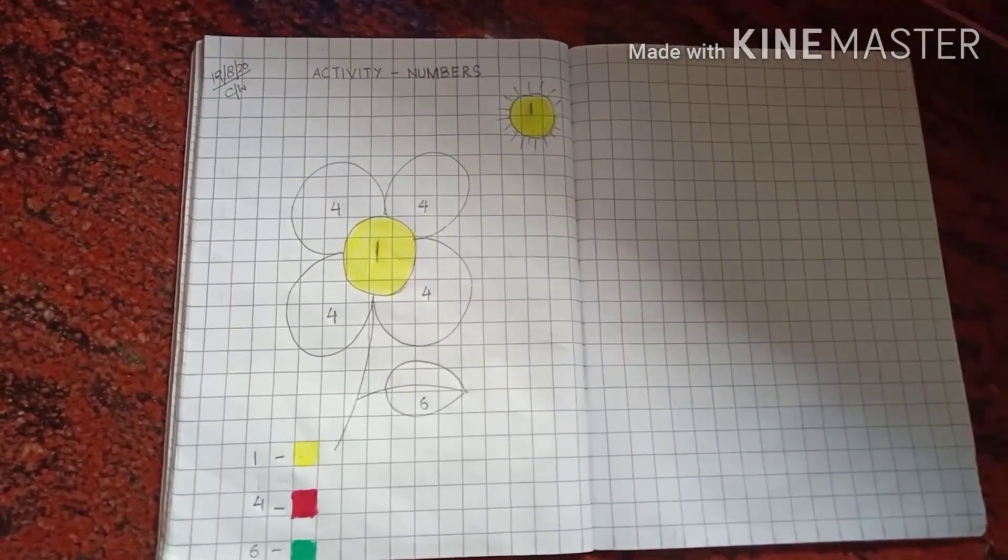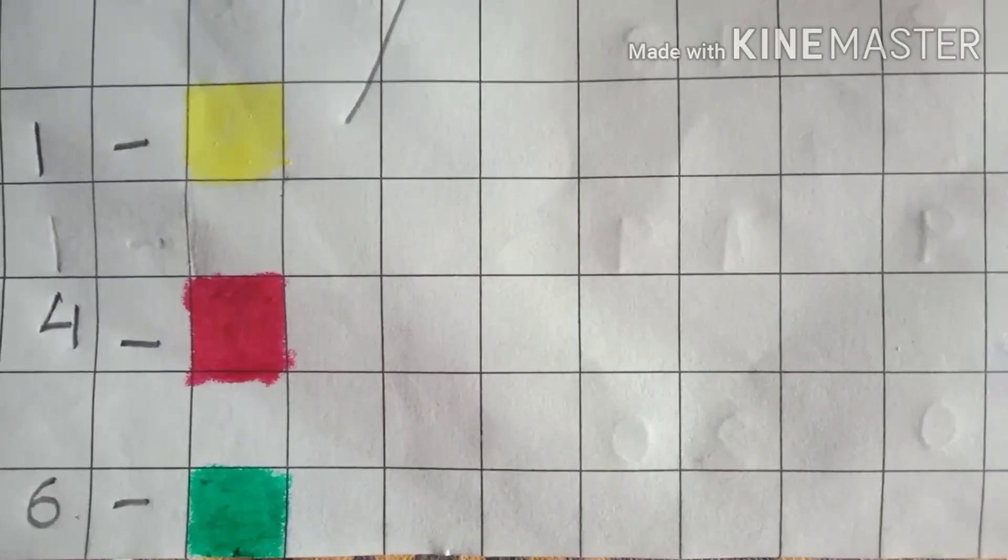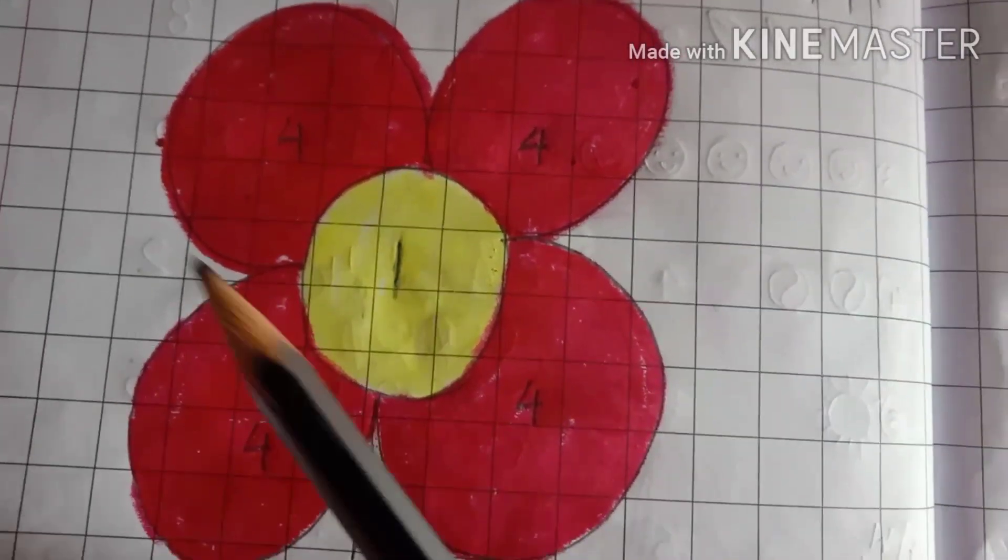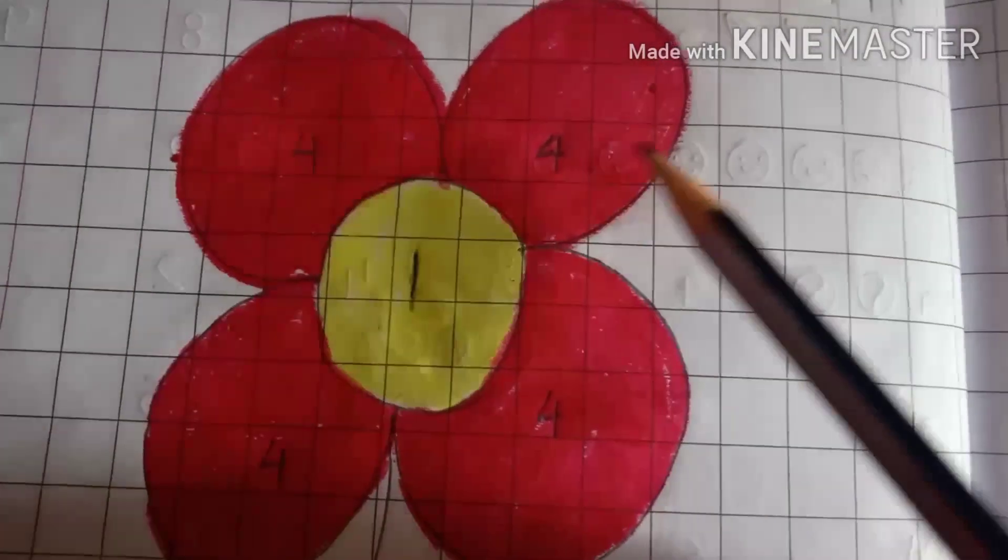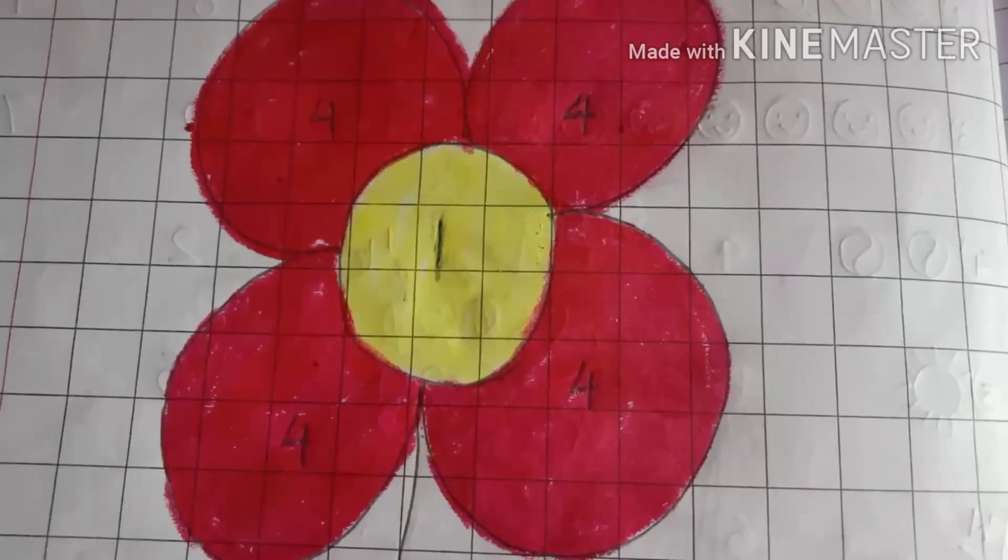Now, comes the next one. 4 means red color. So, these are the places where number 4 has been written. So, we have colored it with red.